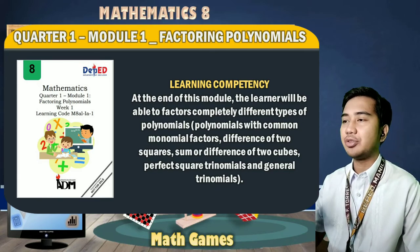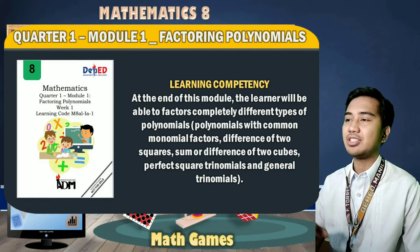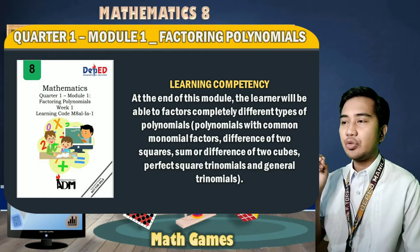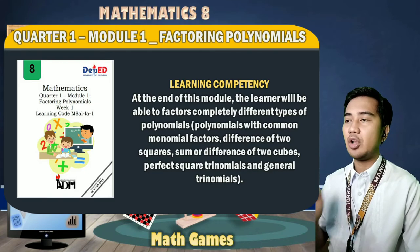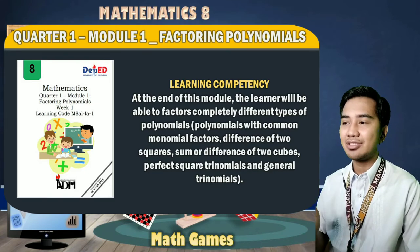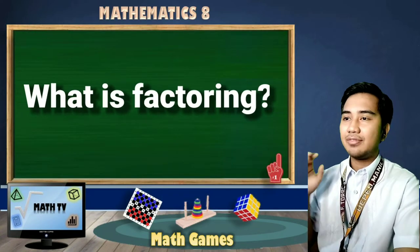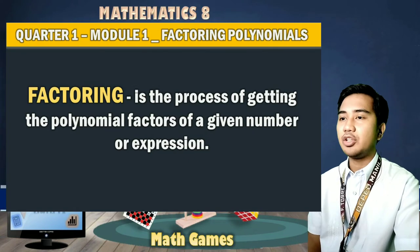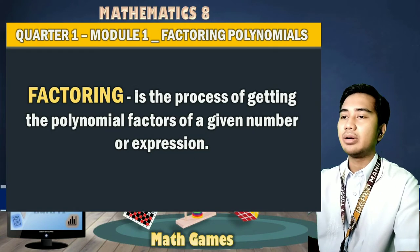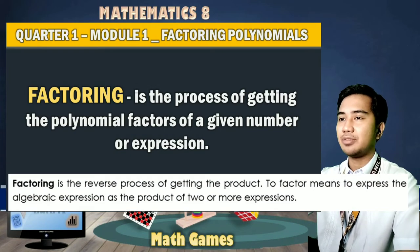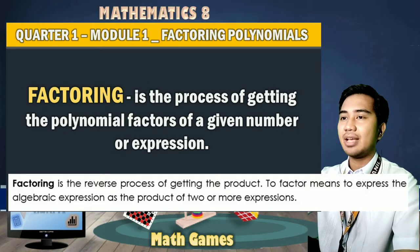So you learned how to factor out prime and composite numbers in the first activity. Now you will learn how to factor out variables. You will also learn how to factor out polynomials by getting their greatest common factor or by using special products. Let's define factoring. Factoring is the process of getting the polynomial factors of a given number or expression. Also, factoring is the reverse process of getting the product. Factoring means to express the algebraic expression as the product of two or more expressions.